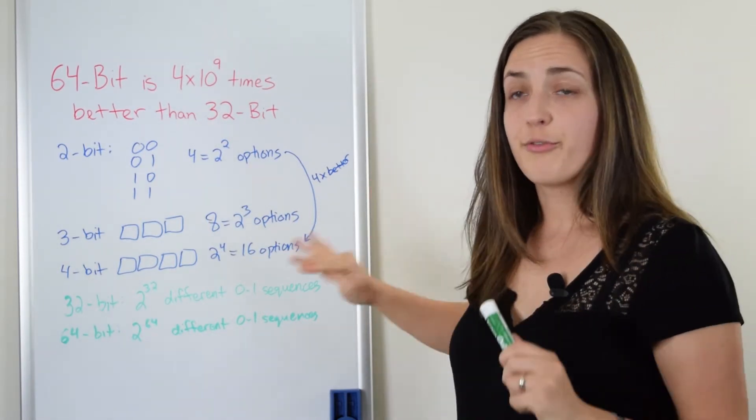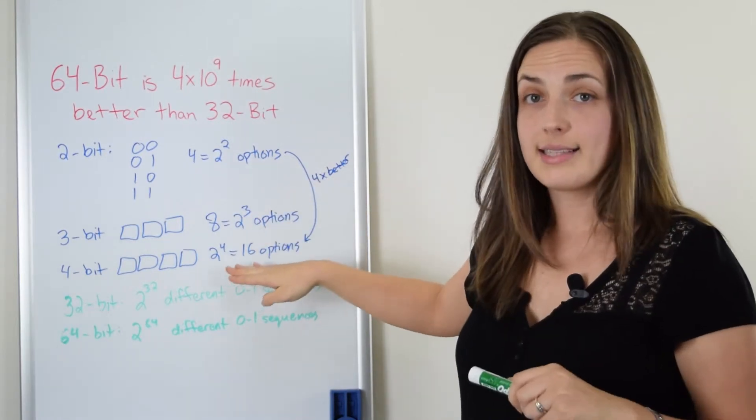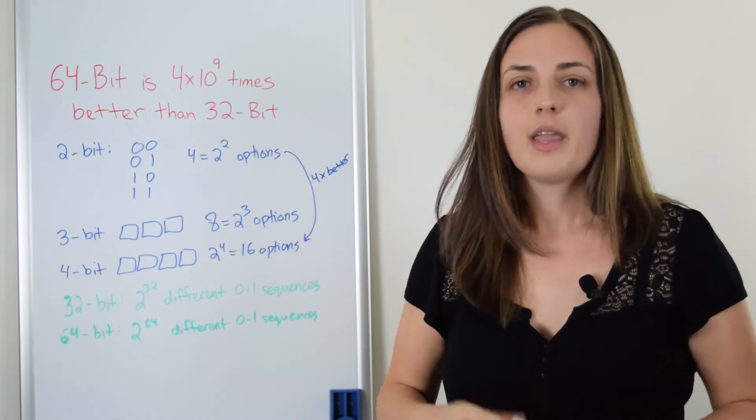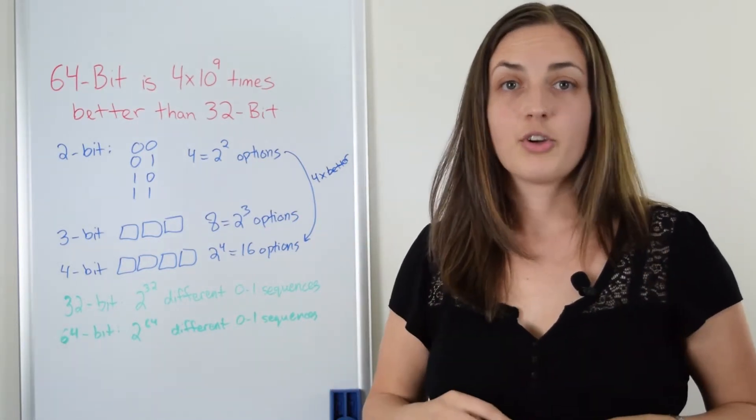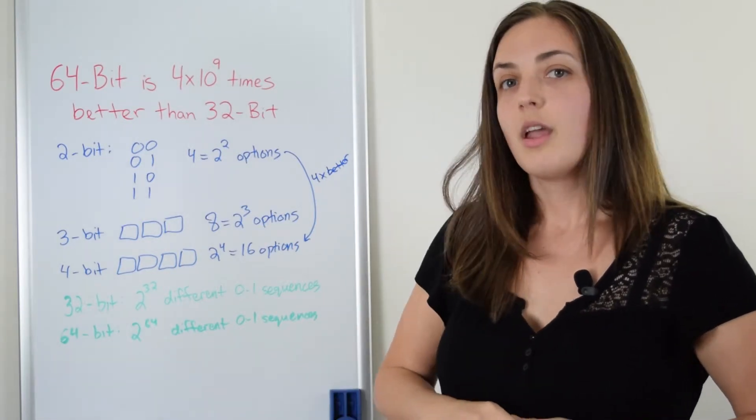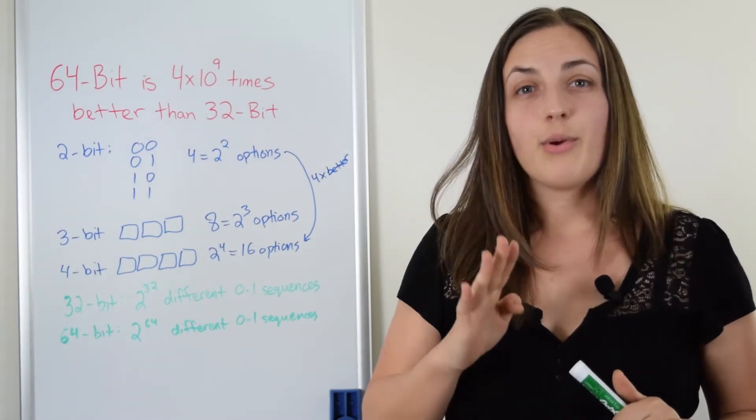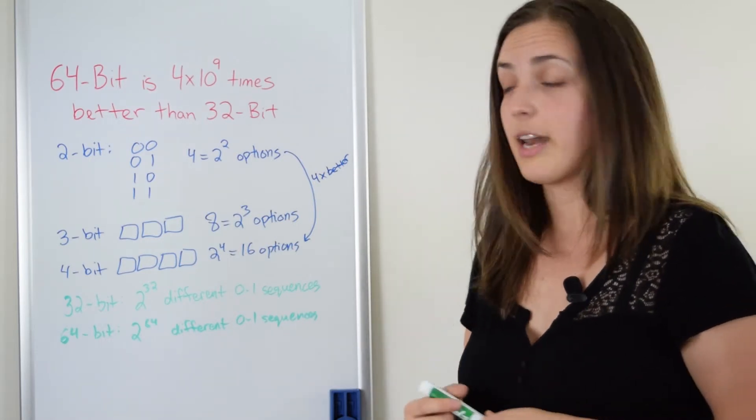Now let's compare these. Just as in the case of the four-bit and the two-bit system, when we compared, we said, okay, let's take a look at two to the power of four divided by two to the power of two. And when the base is the same, you can just subtract the exponents and we said, ah, great, it's four times as good because two to the power of two is four. Now for this example, we have two to the power of 64 and we want to know the ratio of that and two to the power of 32. Let's look at it.